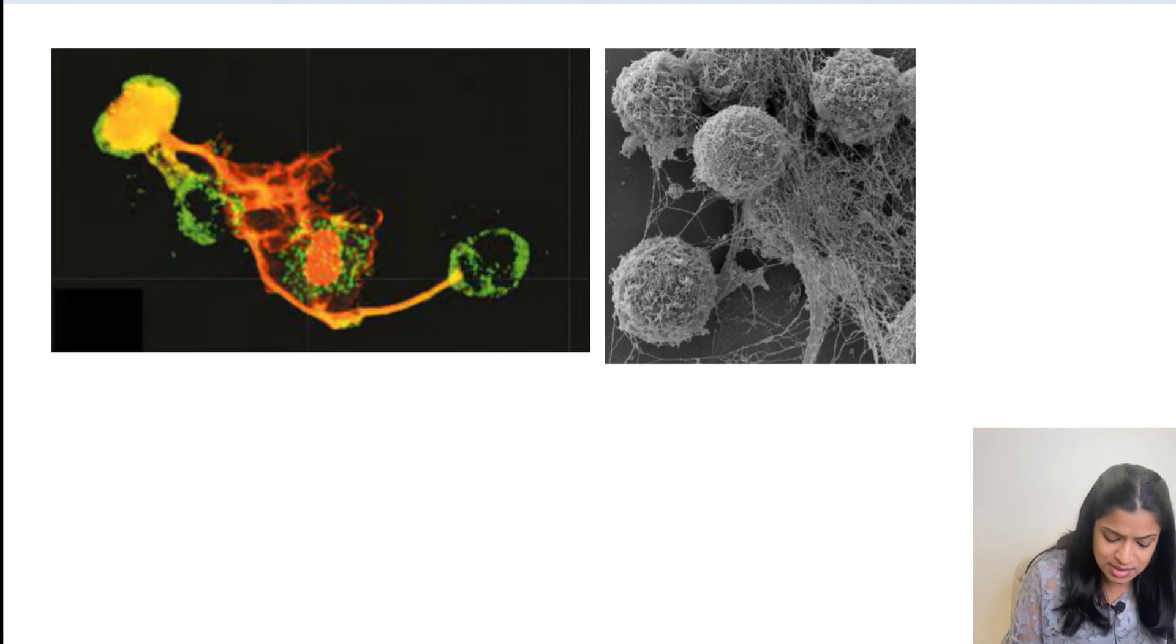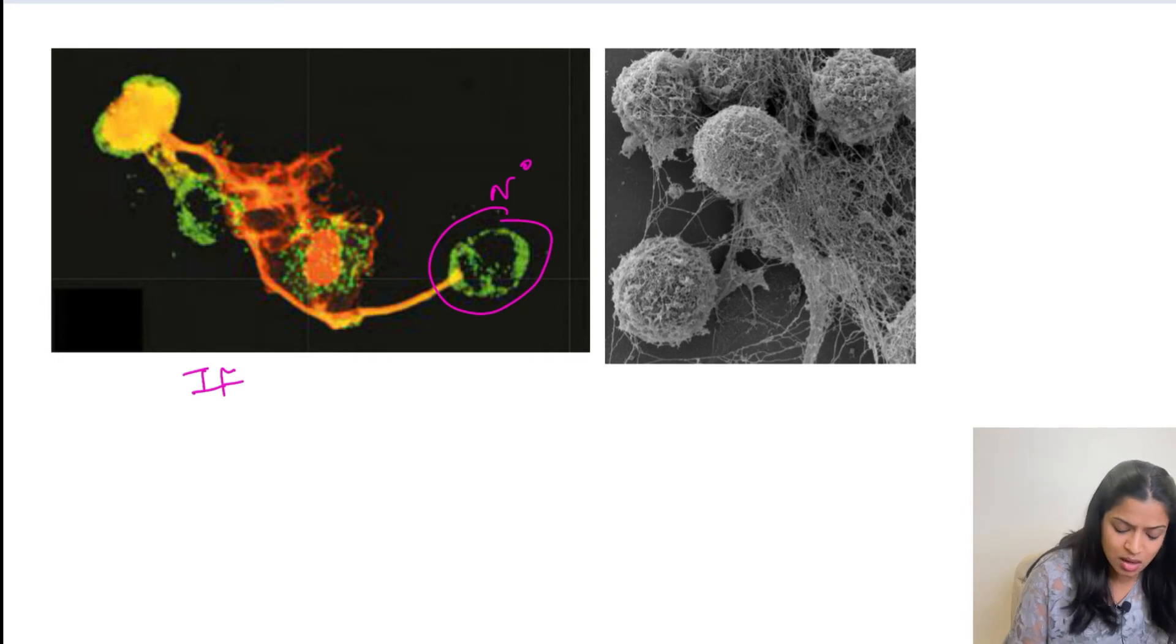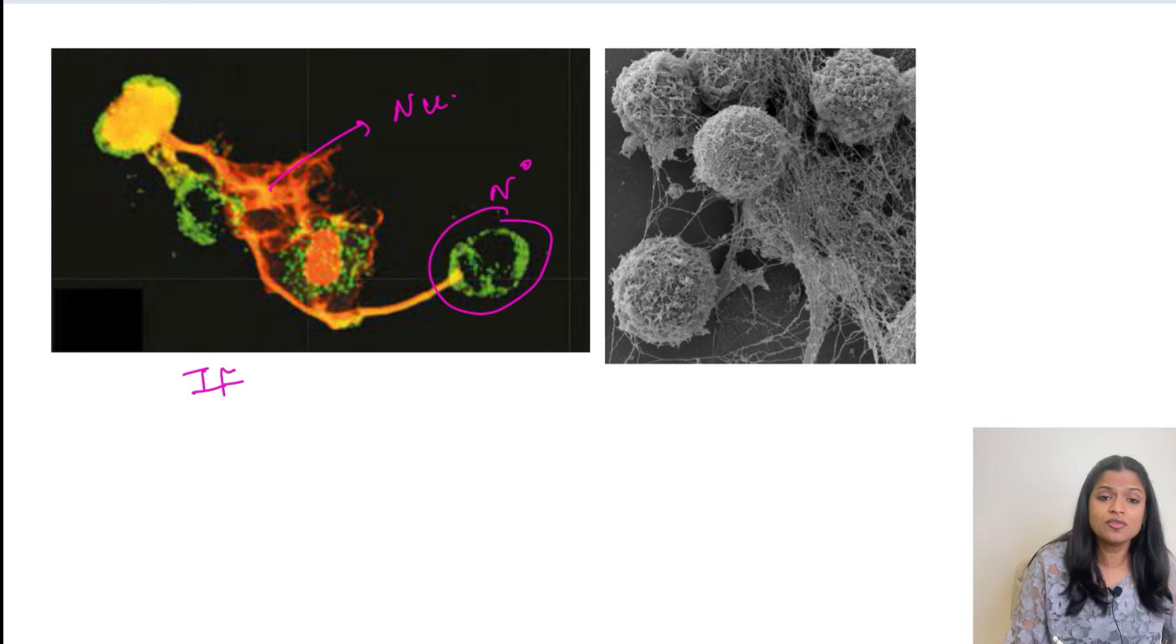So this is an immunofluorescence image of these NETs. So this green color cell is a neutrophil which has extruded this nuclear material. So this orange material is the nuclear material along with the granular content. So it is kind of granular appearance. So this is an image of NETs. So remember this image, it can come as an image-based question in one of the exams.